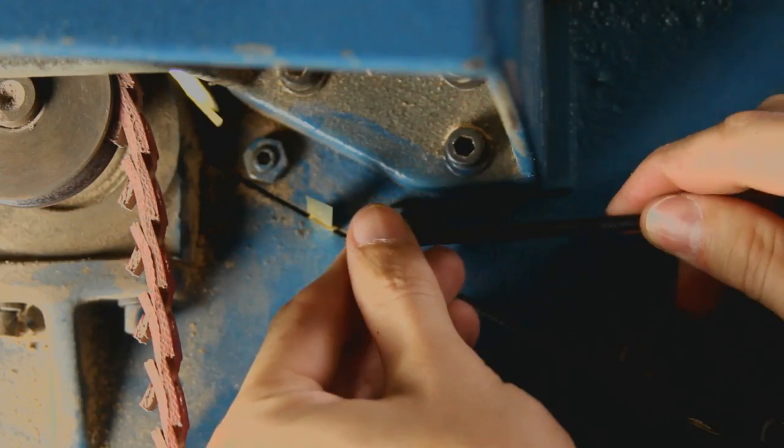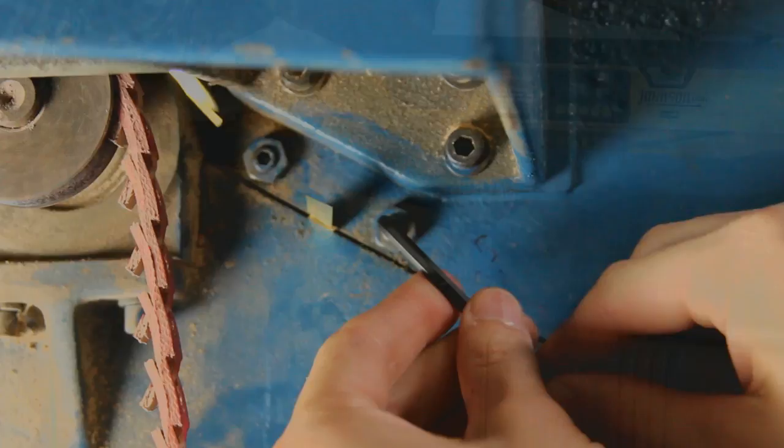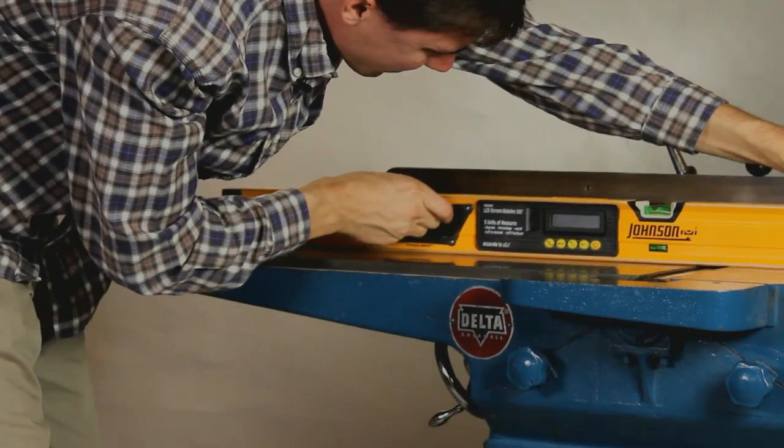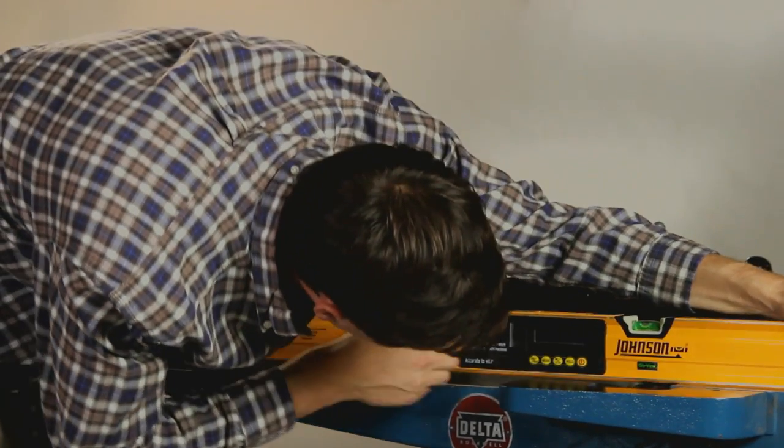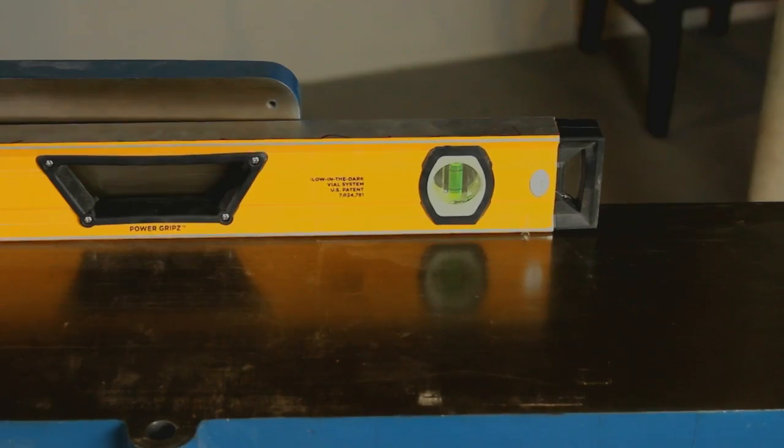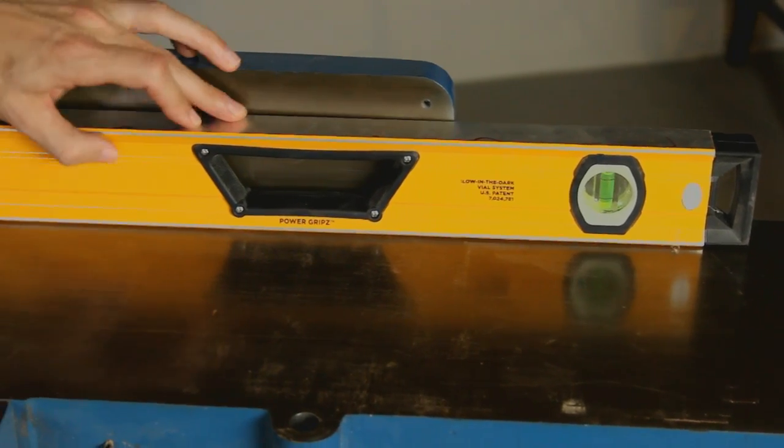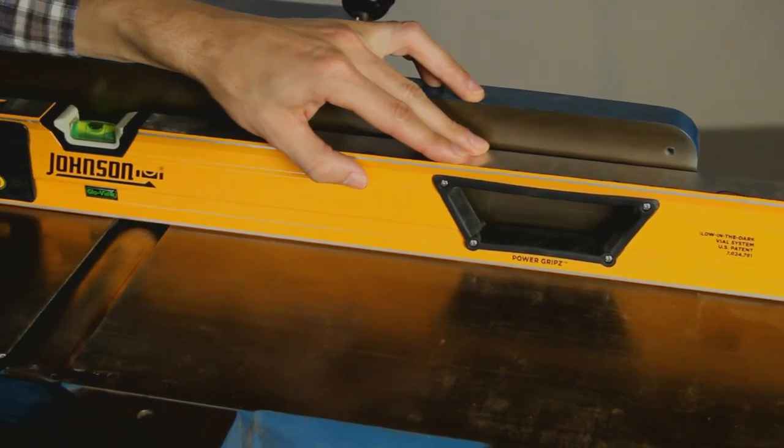Once you're satisfied, tighten down the jib screws and use your straight edge to check your work one last time. Now you can set your outfeed table's height so that its surface is level with the knife edge's topmost point during rotation.